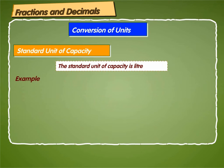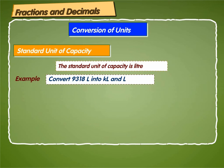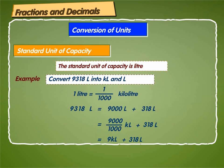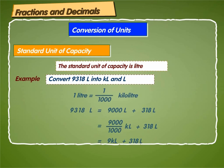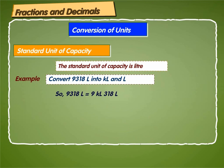Let us take an example where we convert lower units to higher units. We need to convert 9,318 litres into kilolitres and litres. We know that 1 litre is equal to 1 by 1,000 kilolitres. So we write 9,318 litres as 9,000 litres plus 318 litres, which is equal to 9,000 divided by 1,000 kilolitres plus 318 litres, giving us 9 kilolitres and 318 litres.